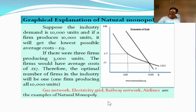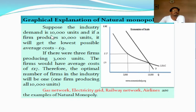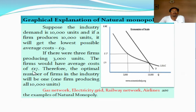This may be shown with the help of a diagram to explain Baumol's definition of natural monopoly. Suppose the industry demand is 10,000 units; if a single firm produces that 10,000 units, it will get the lowest possible average cost of rupees 9. If that market demand is produced by three firms collectively, then it will cost rupees 17. Therefore, the optimal number of firms in the industry will be 1 — meaning in such a case, it is better to produce by a single monopoly firm than to make it competitive.